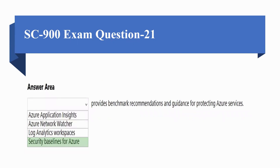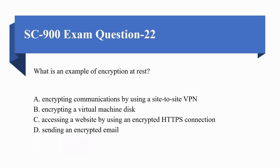The correct option is Security Baseline for Azure. Moving towards the next question: What is an example of encryption at rest? Options are: A) Encrypting communication by using a site-to-site VPN, B) Encrypting a virtual machine disk, C) Accessing a website by using an encrypted HTTPS connection, D) Sending an encrypted email. The solution is B: encrypting a virtual machine disk.